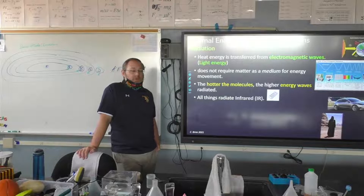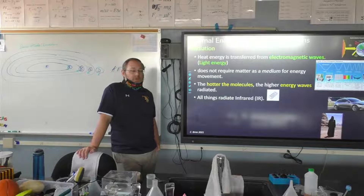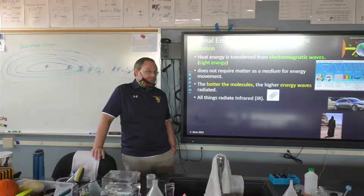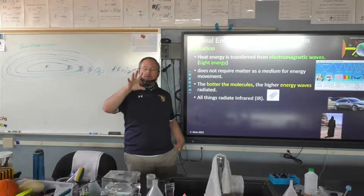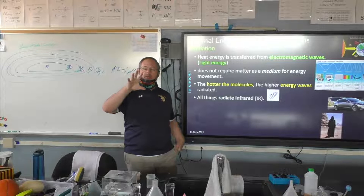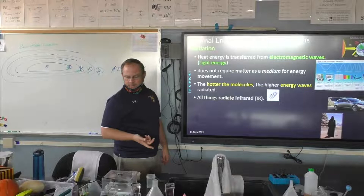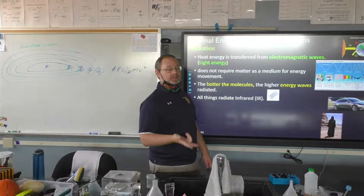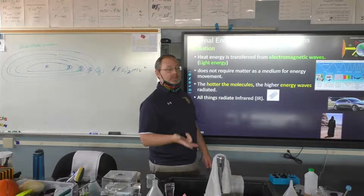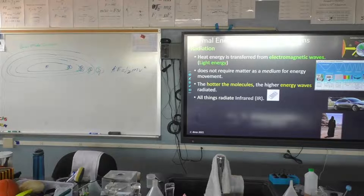Everything emits infrared light. Your toaster toasts your food with infrared light — it actually toasts by radiation. Even a light bulb that's turned off is still emitting infrared light. Everything emits infrared light. You do too, which is why you will never be entirely invisible — even in pitch-black darkness, as long as you're at normal body temperature, your molecules are still vibrating and emitting infrared light.